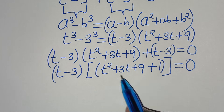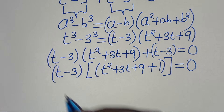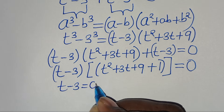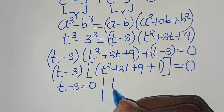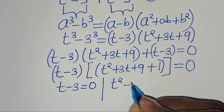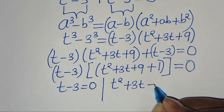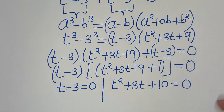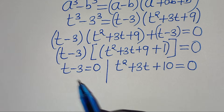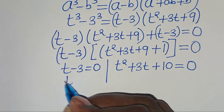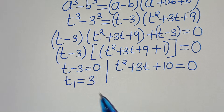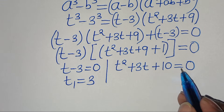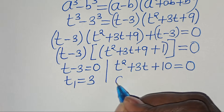From here we have two parts. The first part is t minus 3 = 0, and the second part is t² + 3t + 9 + 1 = 0, which simplifies to t² + 3t + 10 = 0. From the first part, t₁ = 3, which is the real solution.